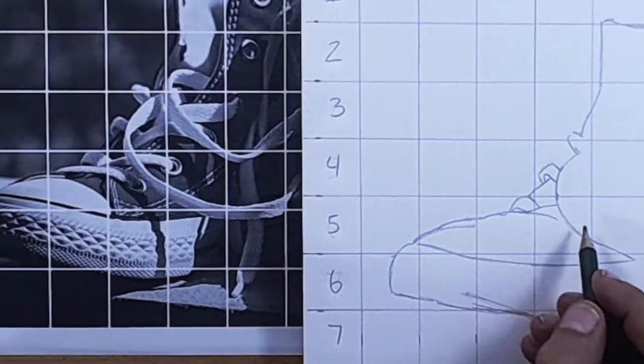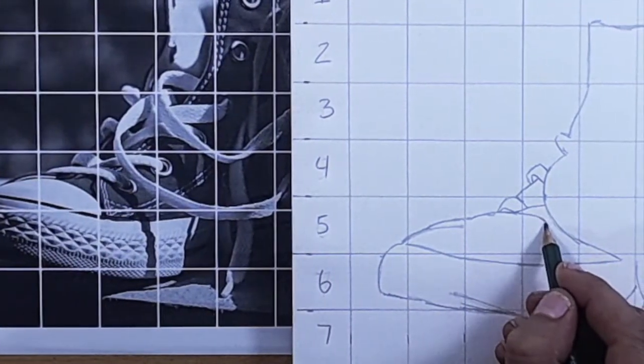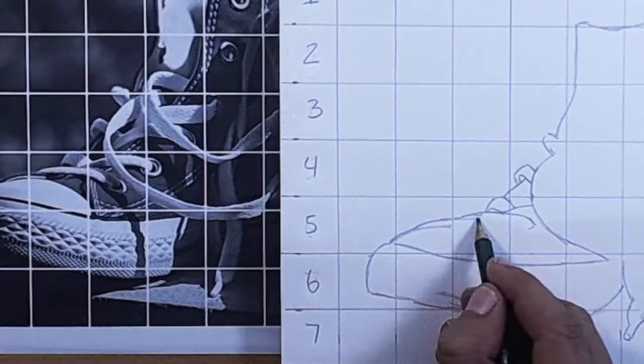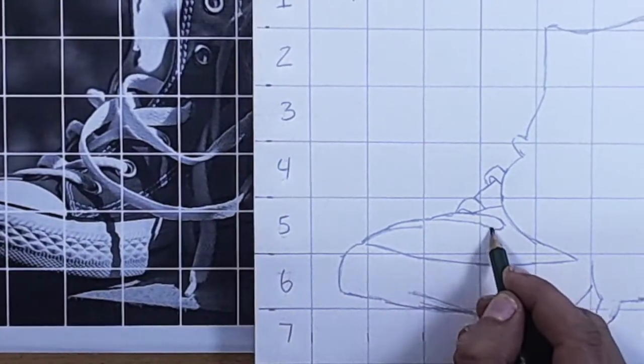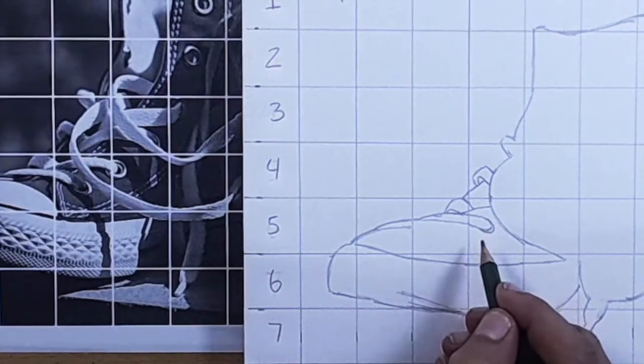I still like to start with some of the larger lines and so where the sole meets the canvas and the rubber toe of the shoe, I like to find that early and then start working on strings and eyelets.